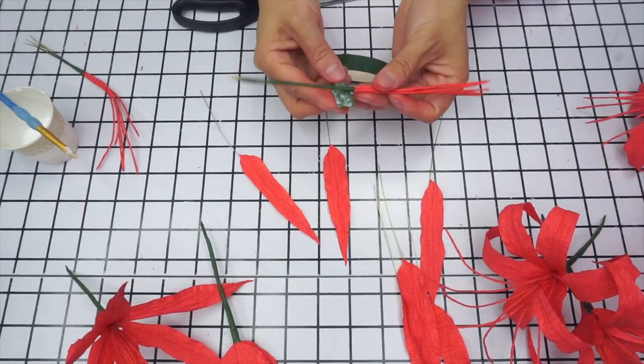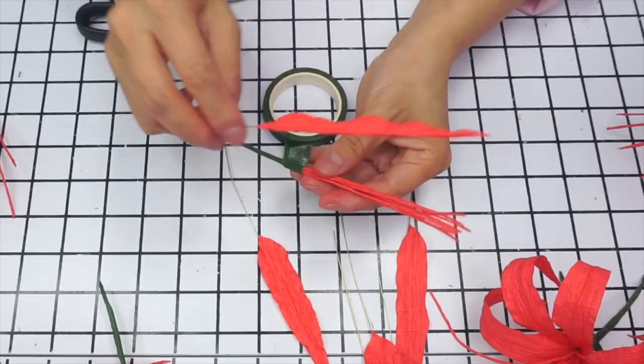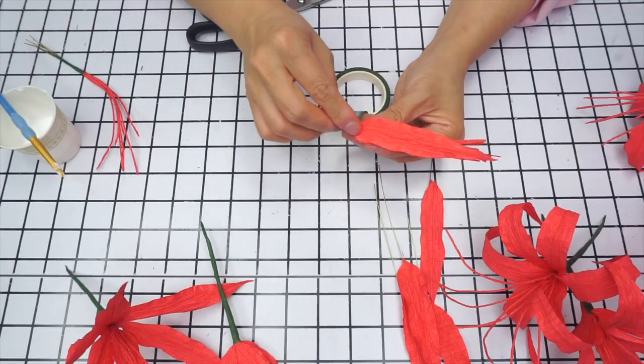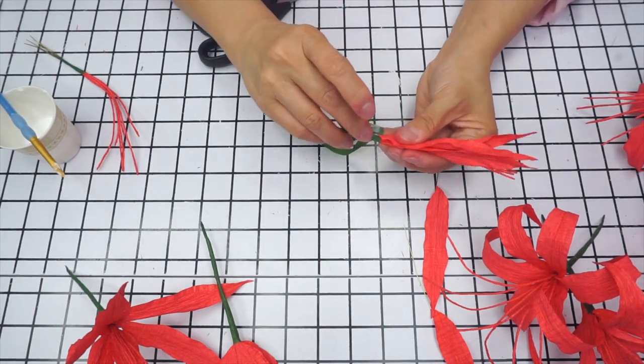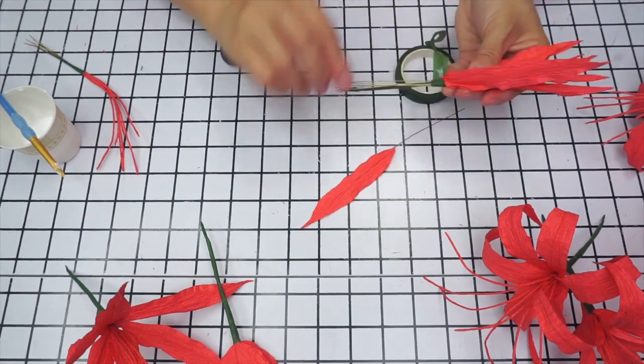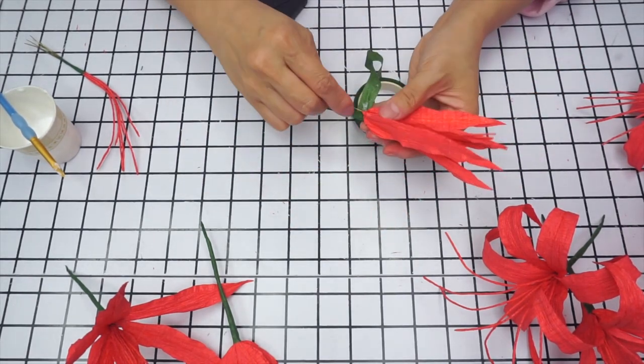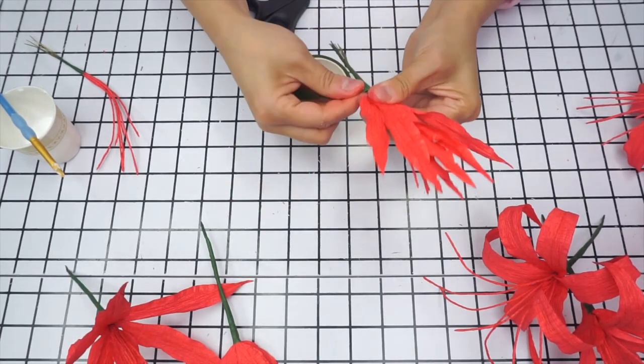Next, start wrapping another strip of floral tape around the stamens and then place a couple of petals against the stem. Wrap the tape around to secure those petals, then place the next petal. Wrap. Add petal. Wrap. When all six petals are attached to the center stem, you can wrap the entire stem until all wires are encased snugly.